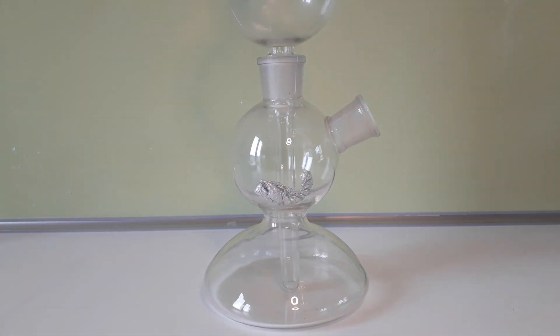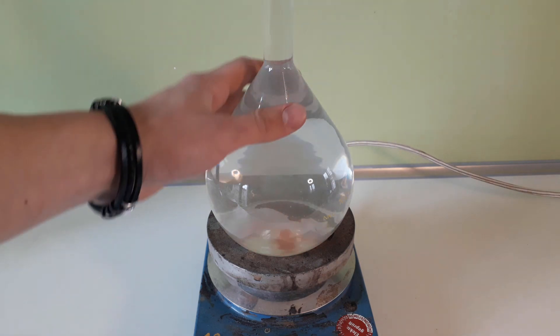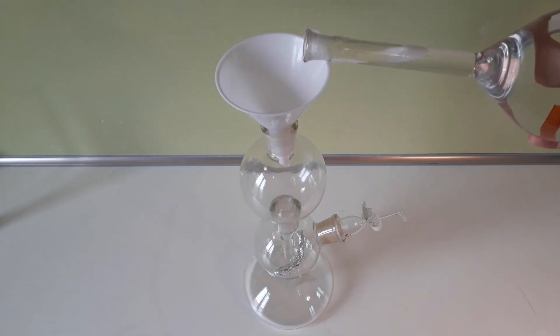Now I am ready to start the actual reaction. Remove the now clear potassium hydroxide solution from the stirrer. Pour the solution into the top part of the Kipp's apparatus.